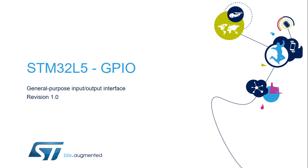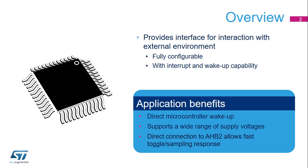Hello, and welcome to this presentation of the STM32 General Purpose I/O Interface. It covers the General Purpose Input and Output Interface and how it allows connectivity to the environment around the STM32 microcontroller. The General Purpose I/O pins of STM32 products provide an interface with the external environment. This configurable interface is used by the MCU as well as other embedded peripherals to interface with both digital and analog signals.